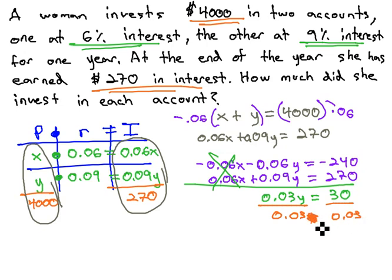Oops, don't divide by the y, just the .03. y is equal to 1,000.